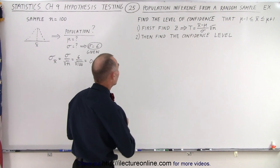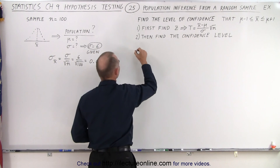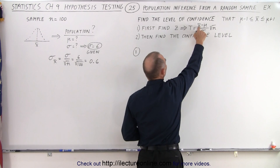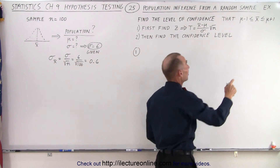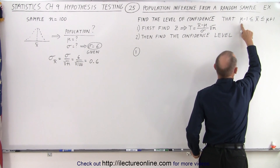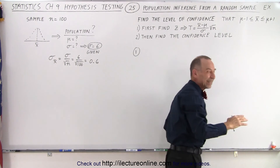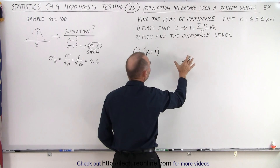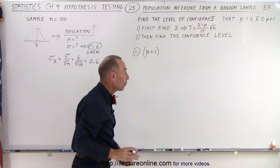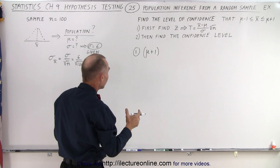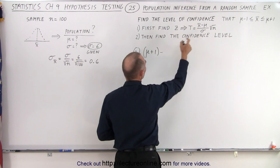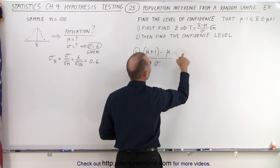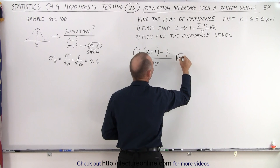First, we're going to calculate the test statistic. We're going to take the mean of the sample, but remember that the sample mean could vary from the population mean minus one to the population mean plus one. So let's take the upper limit — the mean of the population plus one — and subtract from that the population mean, divided by the standard deviation, multiplied by the square root of the sample size.